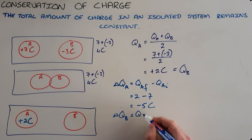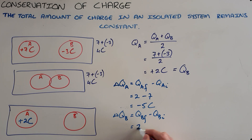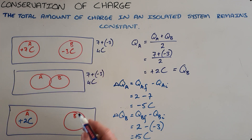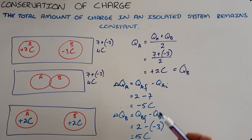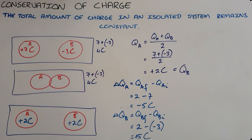We can do the same for object B, where we calculate the change in charge of object B by subtracting the initial charge from the final charge. The final charge was 2 and the initial charge was negative 3. The signs here are important, and we see that the change in charge was positive 5 coulombs, which makes sense because we went from negative 3 to positive 2. What's important to see here is that the change in charge is equal but opposite, because 5 coulombs of charge were transferred from one object to the other.